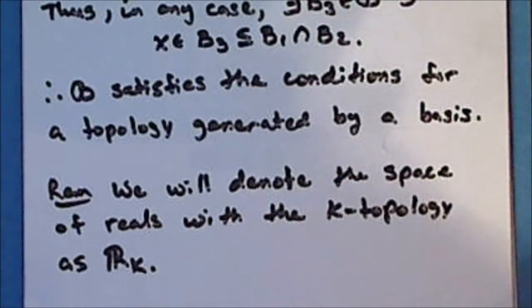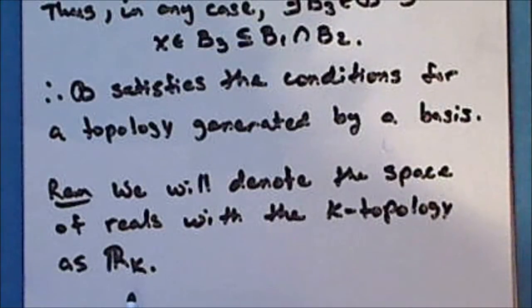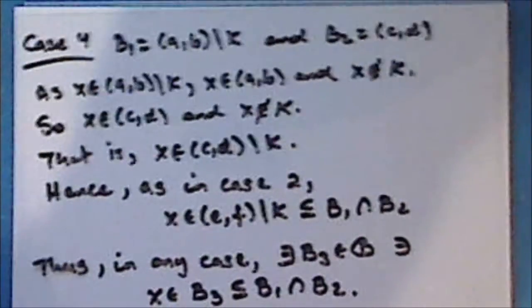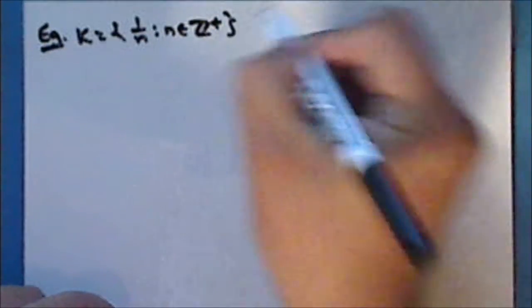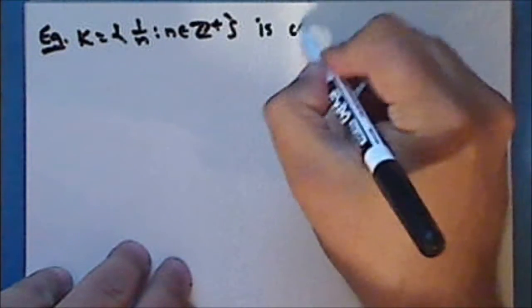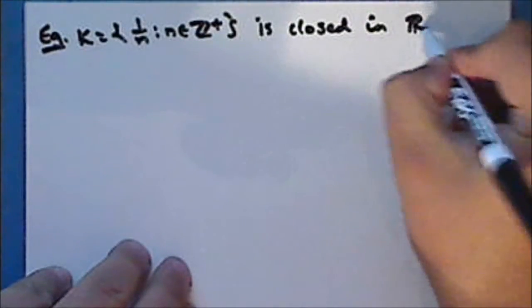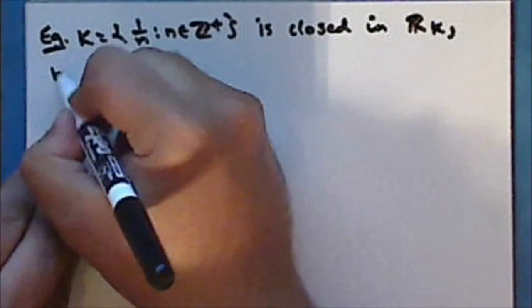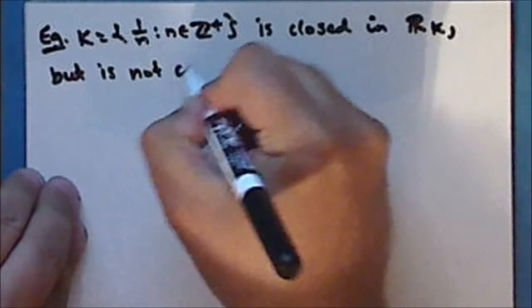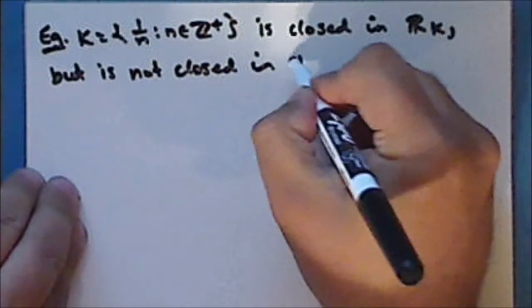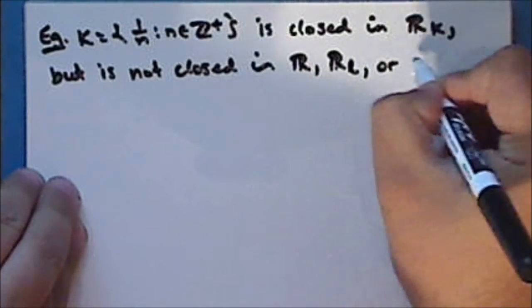We will not be looking at all the topological properties of this space, but we will look at the ones that distinguish this space from the real line, the Sorgenfrey line, and the Michael line. Next we will look at the set K, and in particular we will show that the set K is closed in the space of reals with the K-topology, but is not closed in the real line, the Sorgenfrey line, or the Michael line.